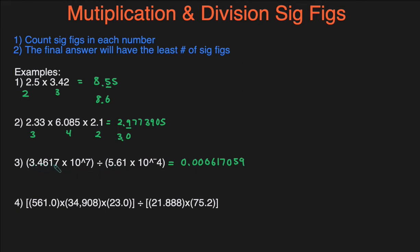The first number has five sig figs. Remember, the scientific notation part doesn't count, so that would be five sig figs. The second number has three sig figs. So our final answer should have the lesser of these two, which is three sig figs. Any zeros in the front don't count, so we can ignore all of those. This will be the first sig fig, that will be the second, and then this will be the third. We take a look at the number next to it — we don't round up this time because zero is less than five. So our final answer would be 0.000617, or in scientific notation, 6.17 times 10 to the negative 4.